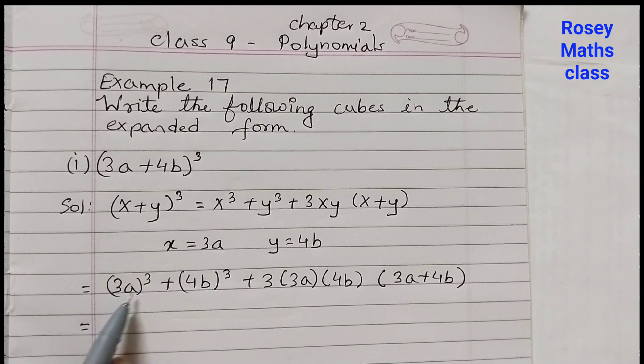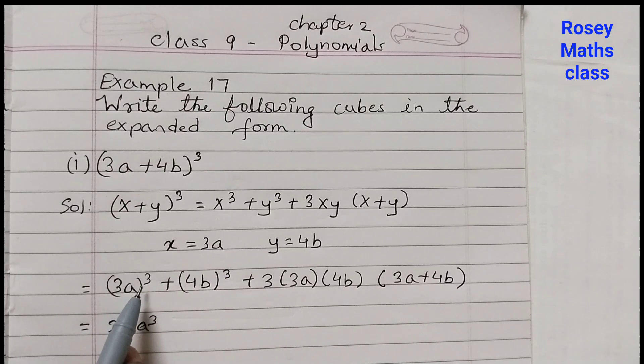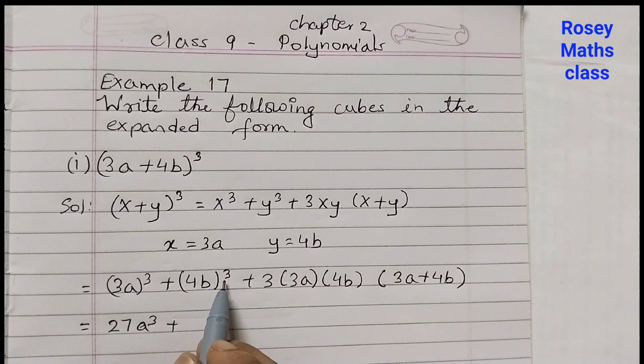So 3a cubed: 3 into 3 is 9, 9 into 3 is 27, so 27a³. 3a cubed means 3 cubed and a cubed multiplied together. Similarly, 4b cubed is 4 cubed into b cubed. So 4 into 4 is 16, 16 into 4 is 64.